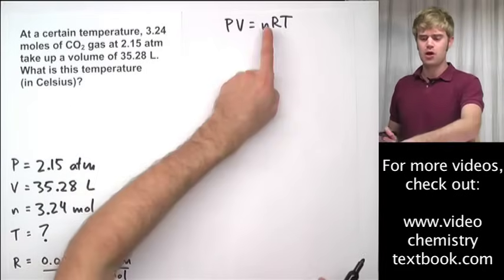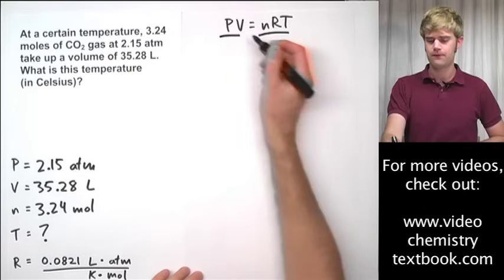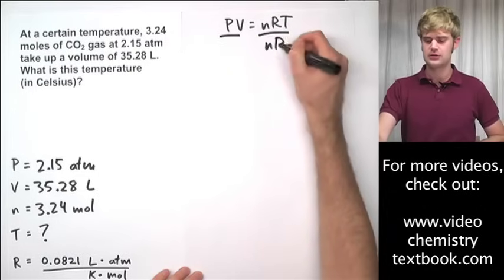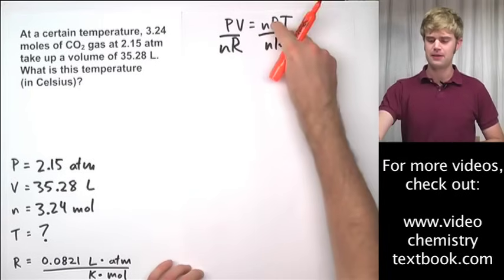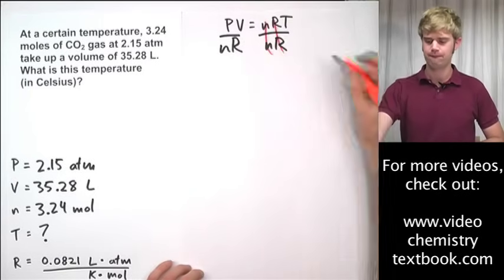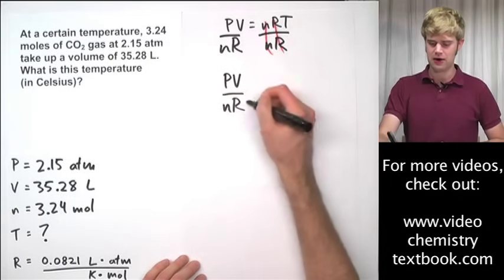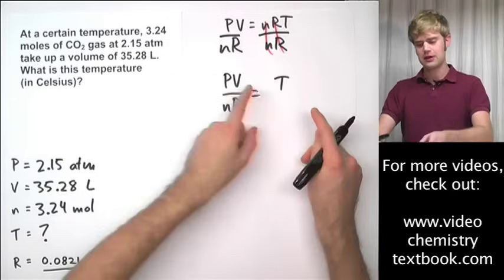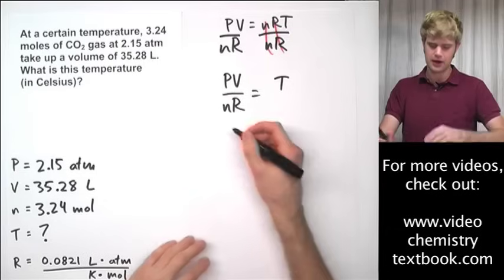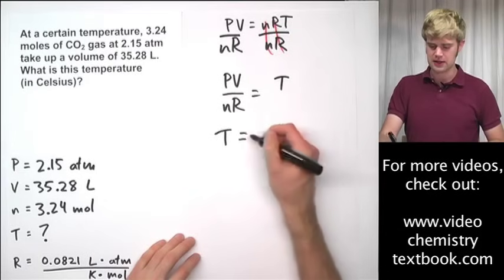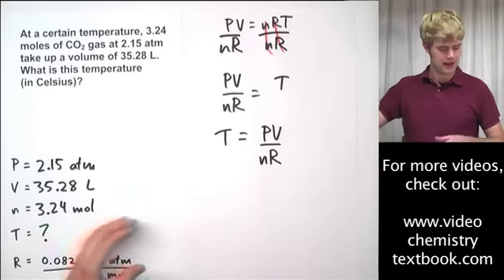In this case, we're going to be solving for T. So, to get T by itself, we'll divide both sides by n times R. The nR up here and the nR down here are both going to cancel out, so we're going to be left with PV divided by nR equals T. I know that some people don't like it when the variable we're solving for is on the right side, so we can rearrange this to T equals PV divided by nR.